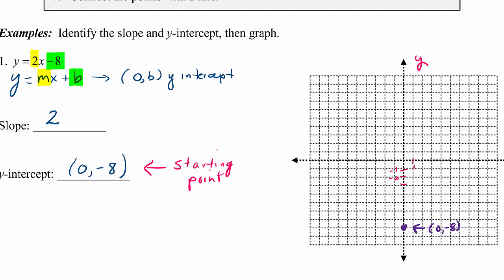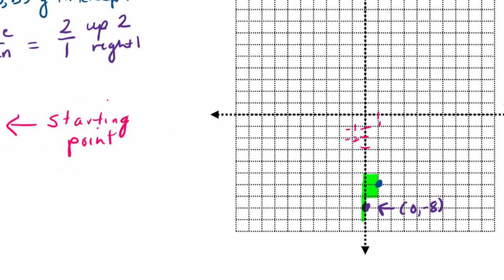Now let's talk about the slope. The slope is the rate rise over run, and we have 2, so we make it into the fraction 2 over 1. That means our rise is going to be a positive 2 — we go up 2 — and our run is a positive 1 — we go right 1. From our starting point (0, negative 8), we rise up 2 units and then go to the right 1 unit, which puts us at a new point. We put another point there.